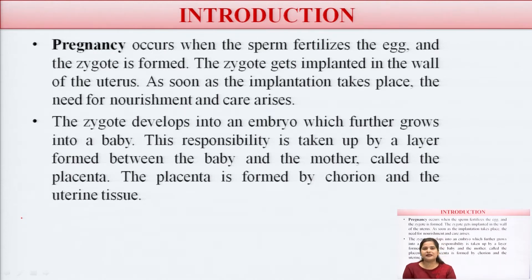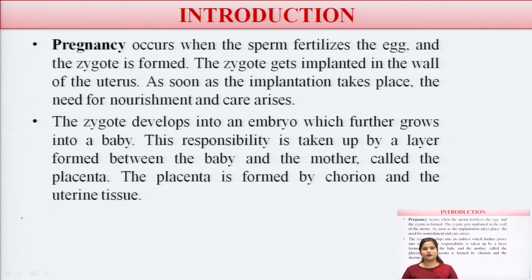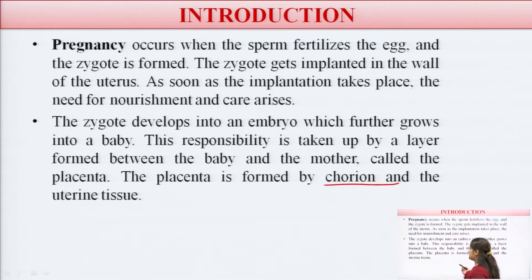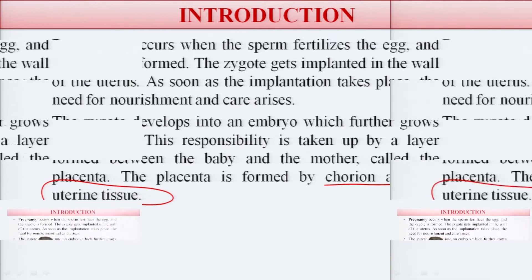The responsibility of nourishing the growing embryo is taken up by a layer formed between the baby and the mother, called the placenta. Placenta is a protective layer between the mother and the baby's body. It is formed by the chorionic and uterine tissues.